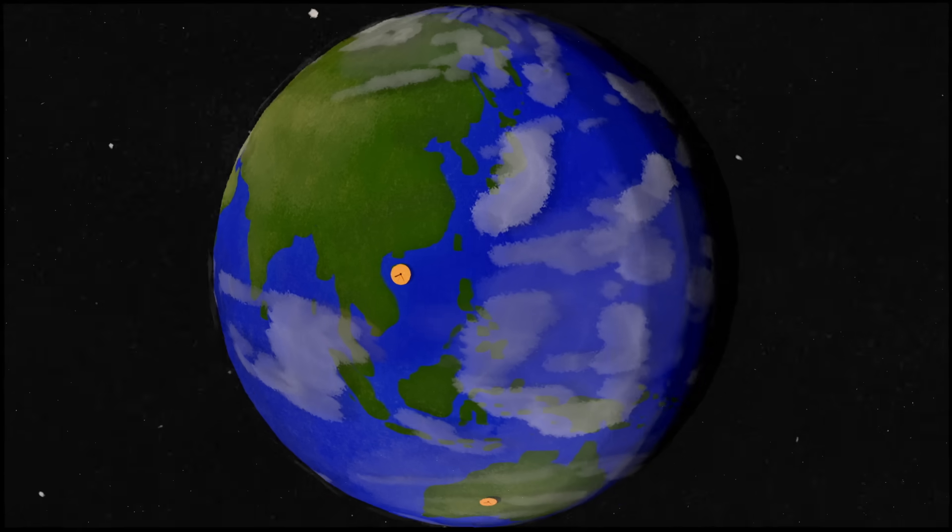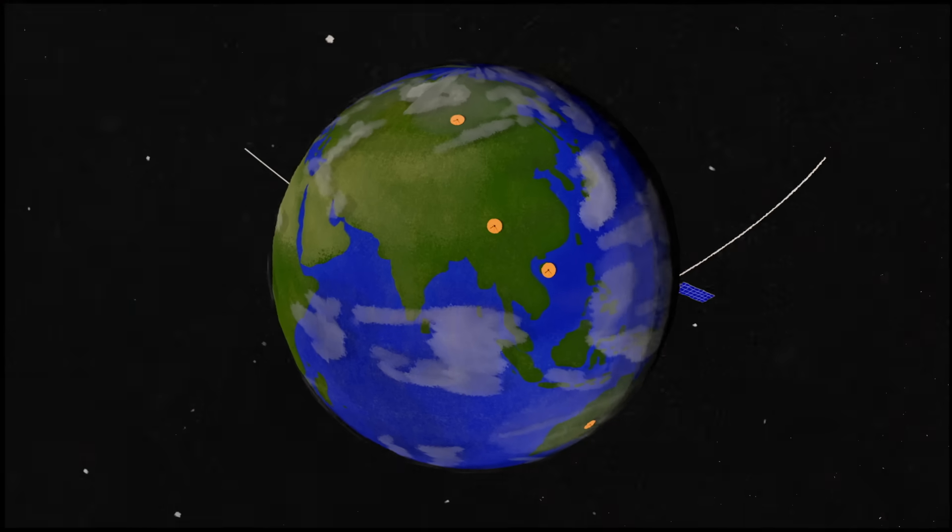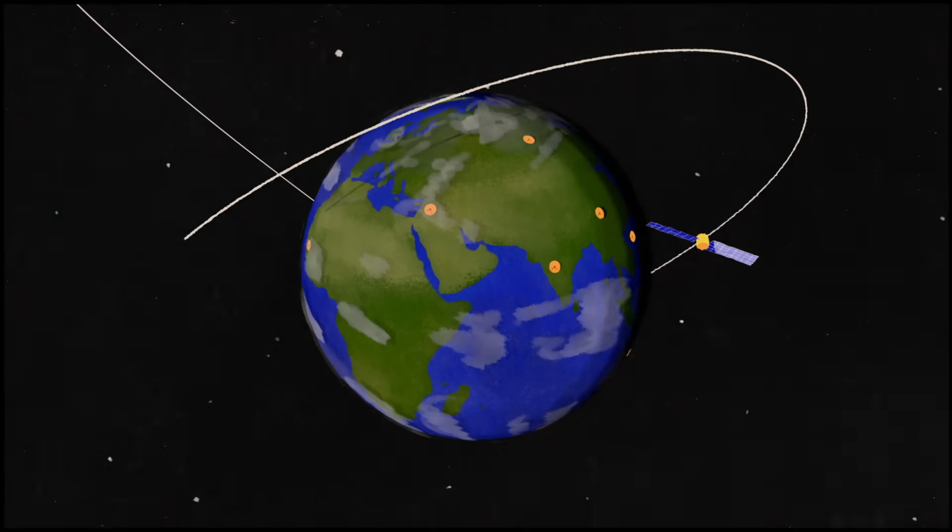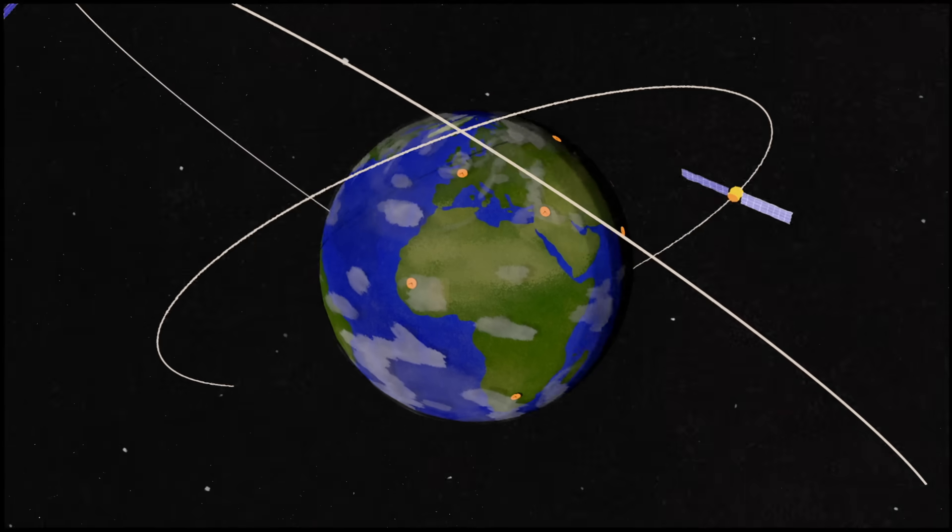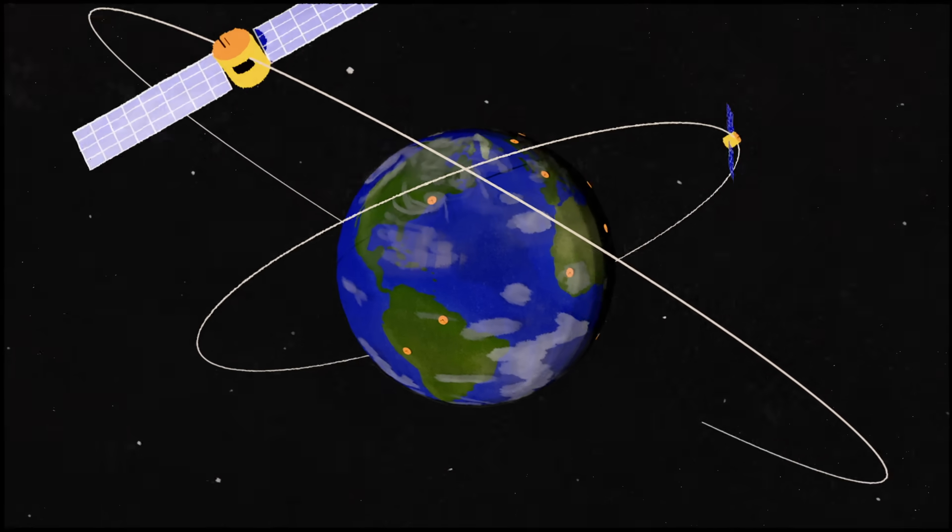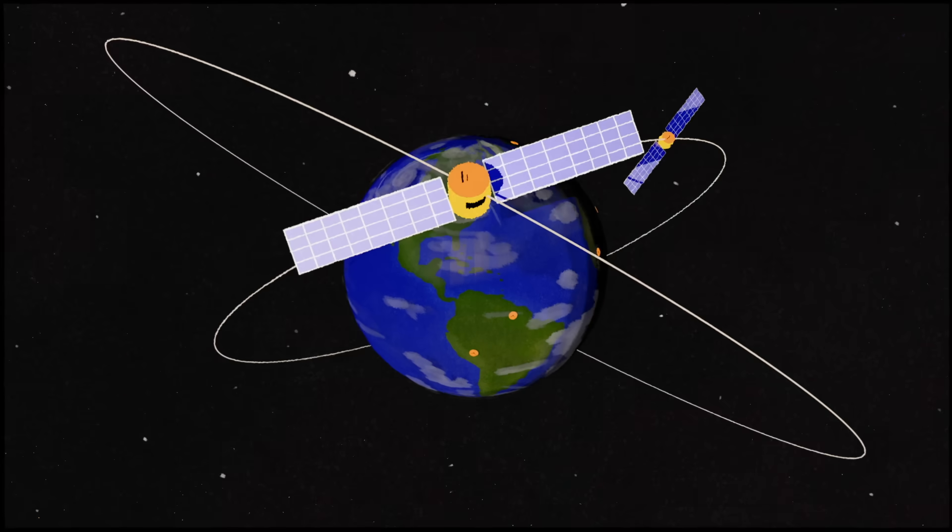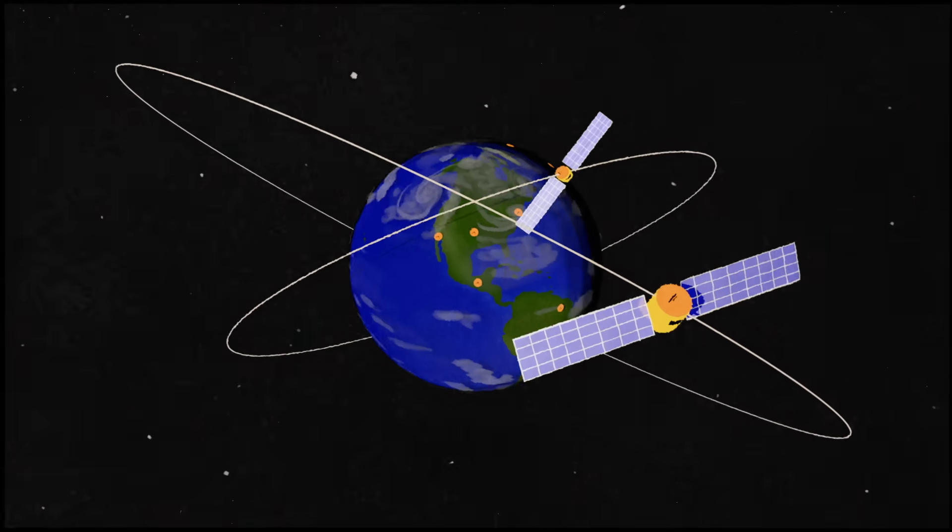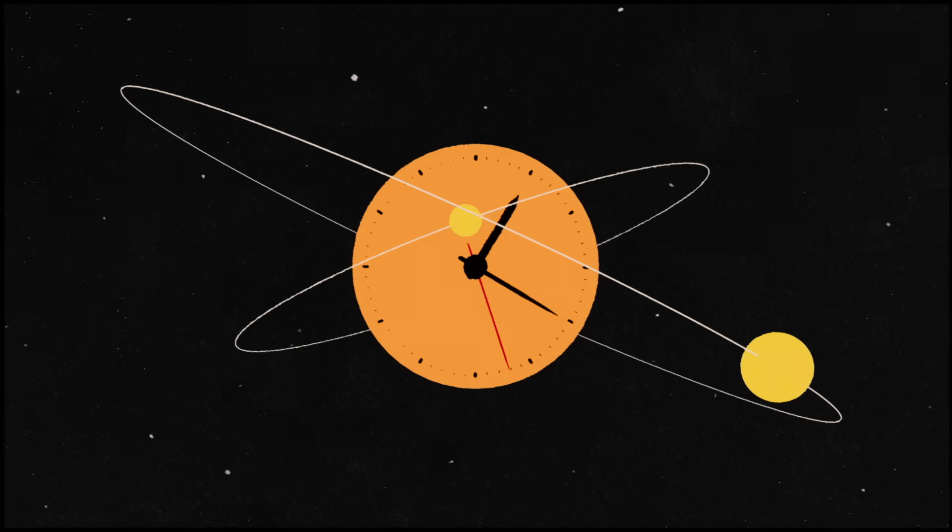Today, atomic clocks are used all over the Earth and beyond it, from radio signal transmitters to satellites for global positioning systems. These devices have been synchronized to help us maintain a globally consistent time, with precision that's second to none.